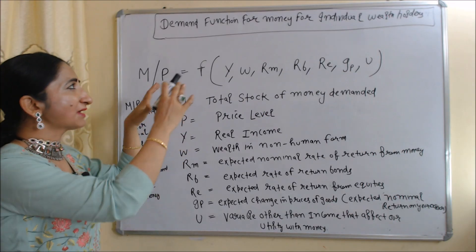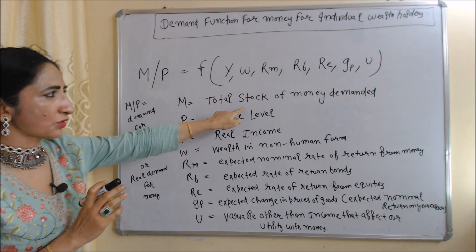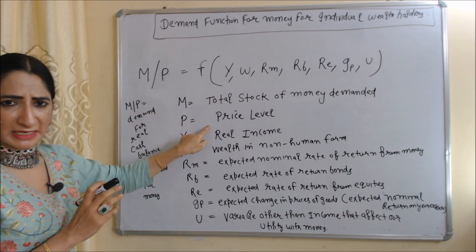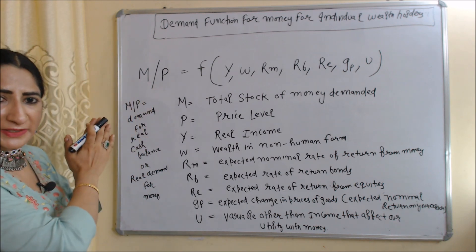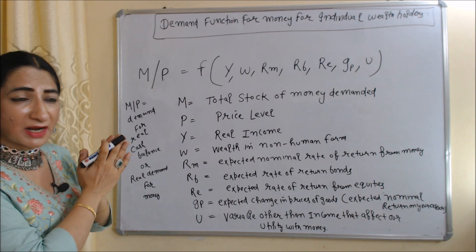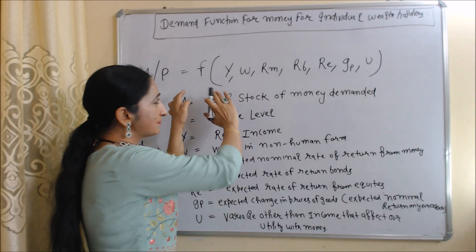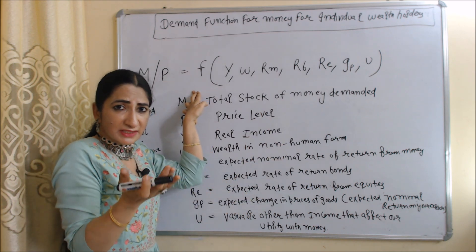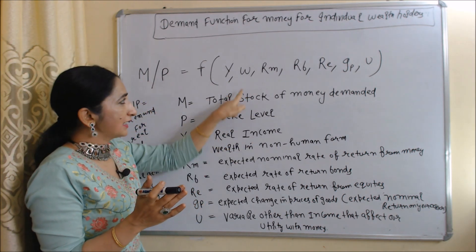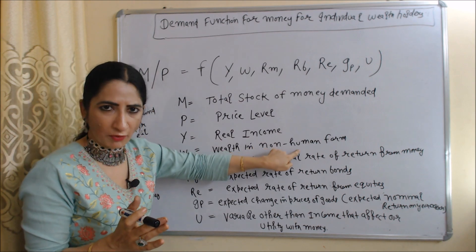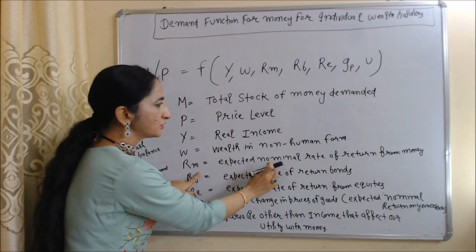Now we will see the demand function for money for an individual wealth holder. In this equation, M is the total stock of money demanded, P is the price level, and M/P means demand for real cash balance — that is, real demand for money. Real demand for money is a function of all these variables. Here, Y means real income and W means wealth in non-human form.